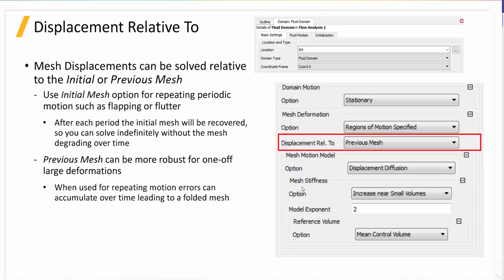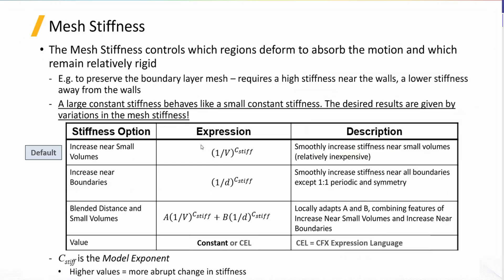The next thing I'd like to touch on is mesh stiffness and the options available there. Mesh stiffness controls which regions deform to absorb the motion and which remain relatively rigid — which elements grow in size and which ones remain similar in size or volume. The goal is often to preserve the boundary layer mesh, which requires higher stiffness near the walls. We don't want those elements to grow as much as elements in the interior of the flow domain. Higher stiffness coefficient values mean stiffer mesh, with larger variation between the growth of larger and smaller elements.